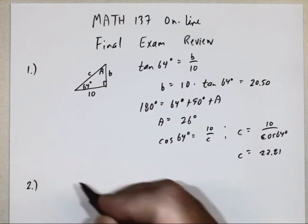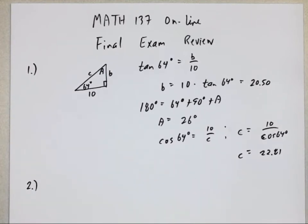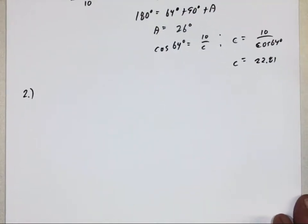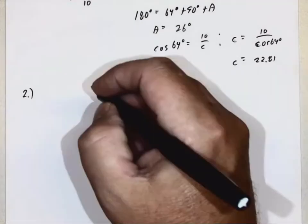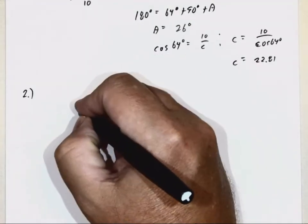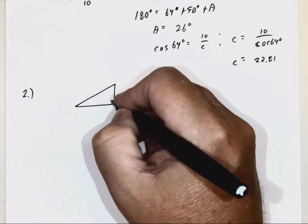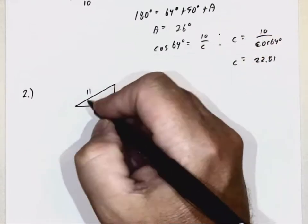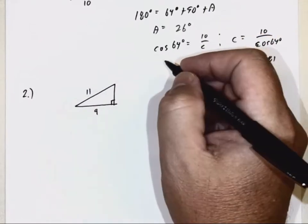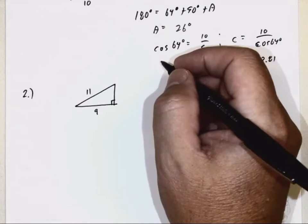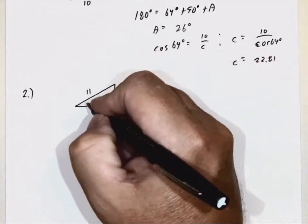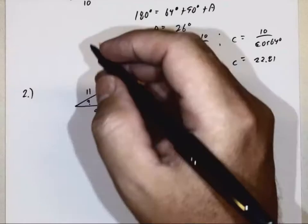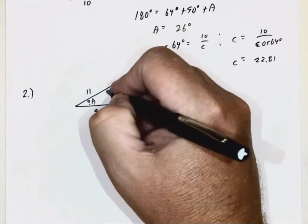Now number two, I'm actually not going to do this, I don't believe. I'm just going to talk about it, because it's really almost identical to number one. Number two says the hypotenuse of a right triangle. Just go ahead and draw a right triangle again. That hypotenuse of a right triangle is 11 inches, so it's 11 inches. If one leg is 9 inches, find the degree measure of each angle.